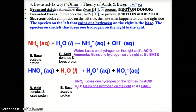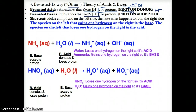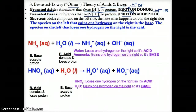On the other hand, Bronsted bases are substances that accept H+ or protons. In short, Bronsted bases are H+ or proton acceptors. Bronsted bases are H+ acceptors because they don't have a lot of H+ since they're basic. Bronsted bases are H+ acceptors, whereas Bronsted acids are H+ donors.